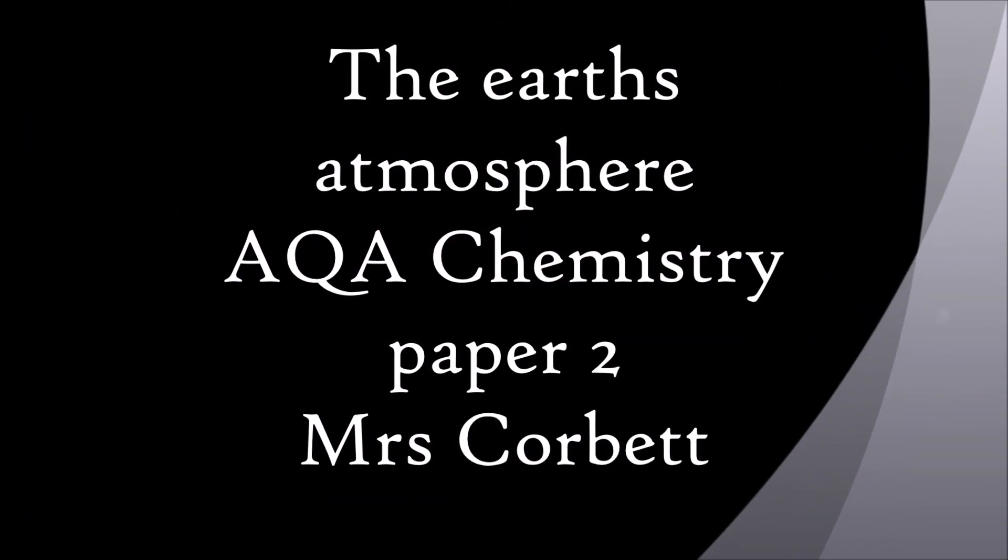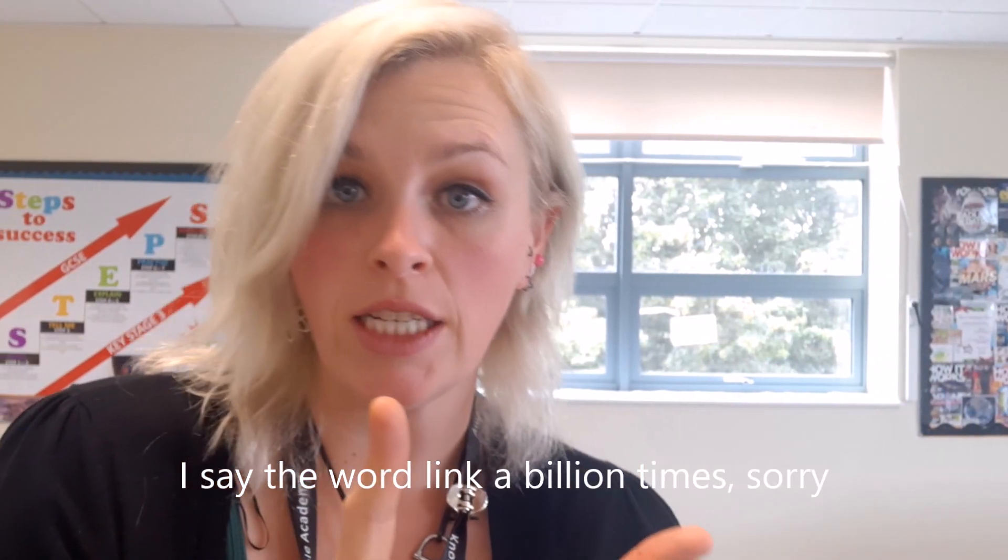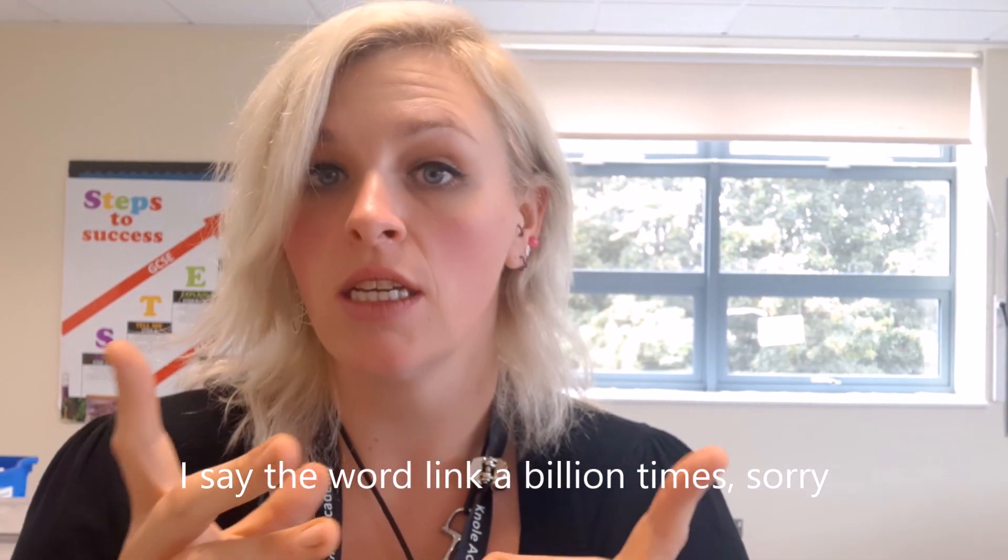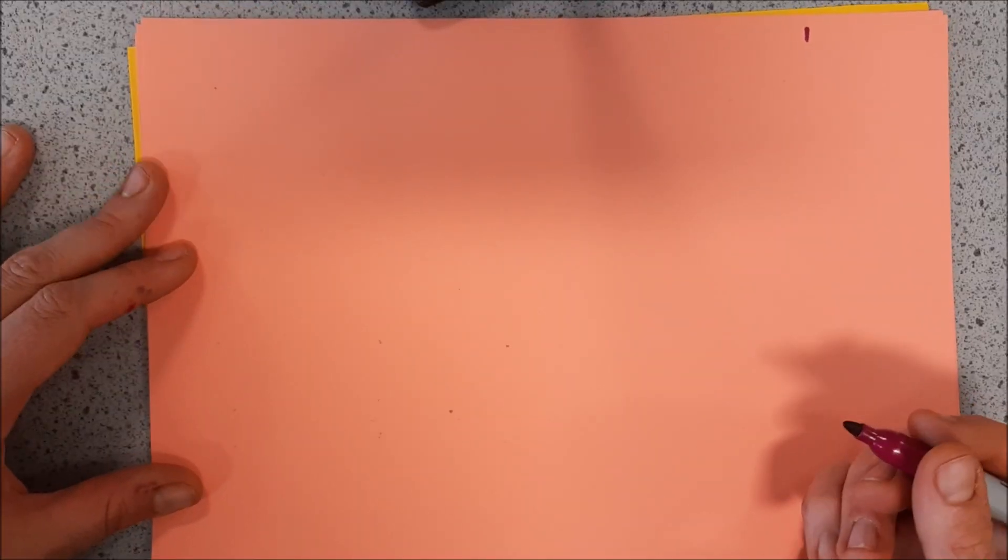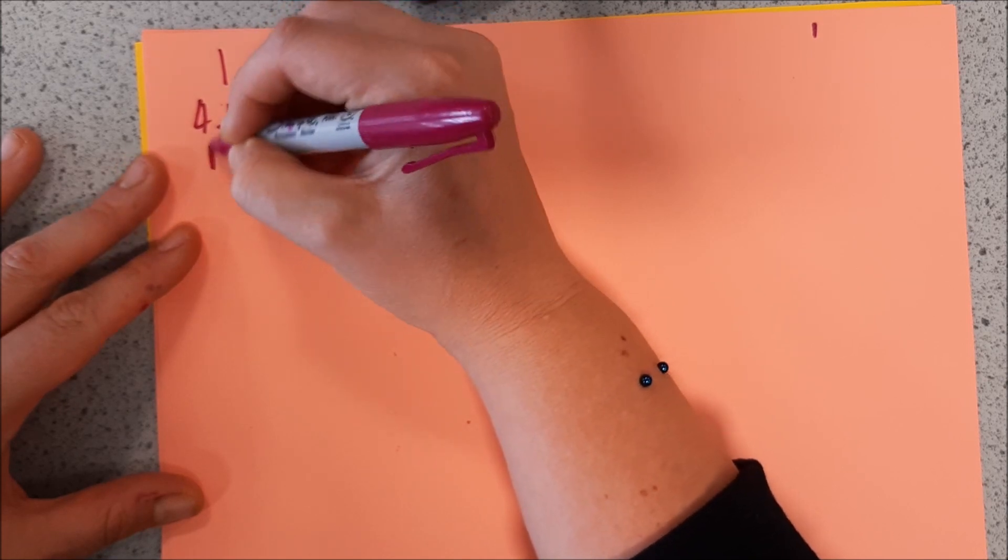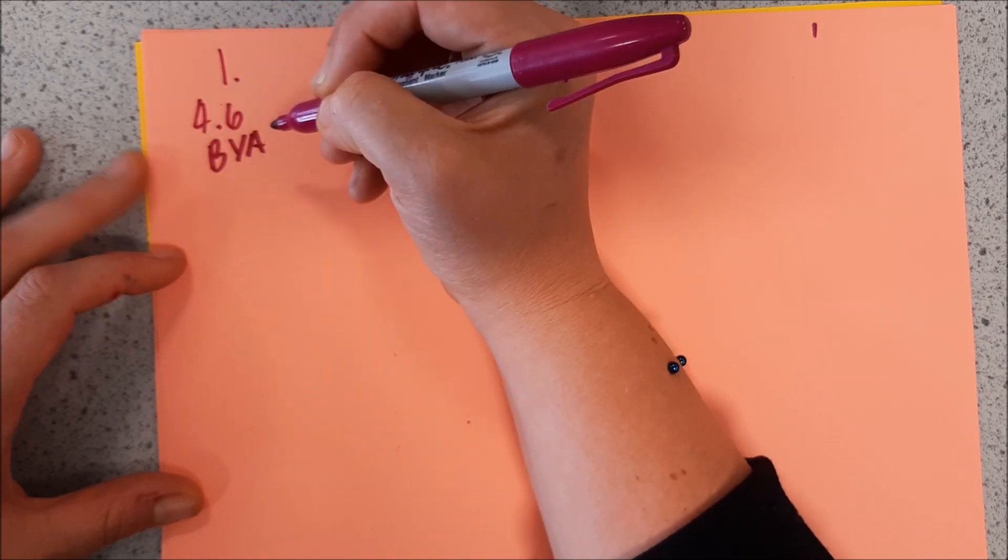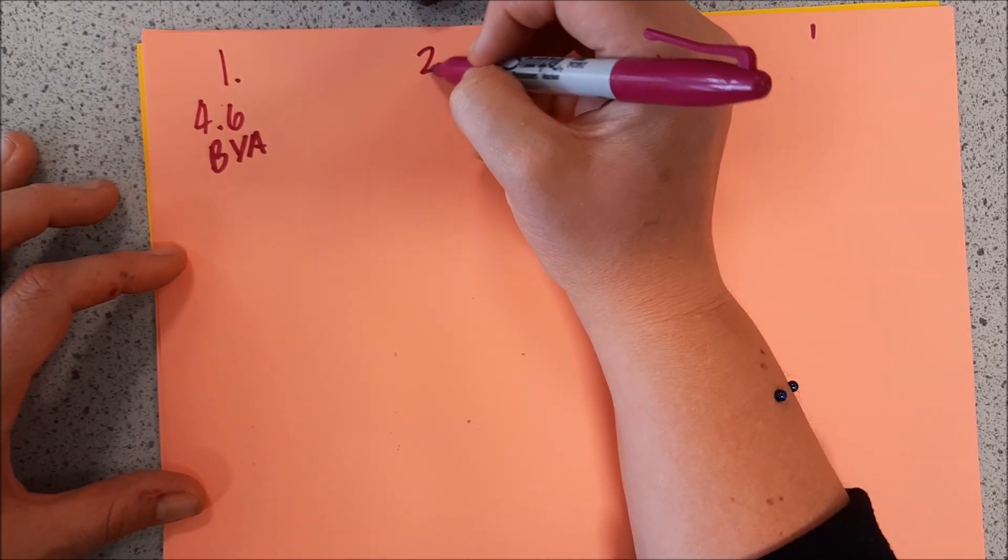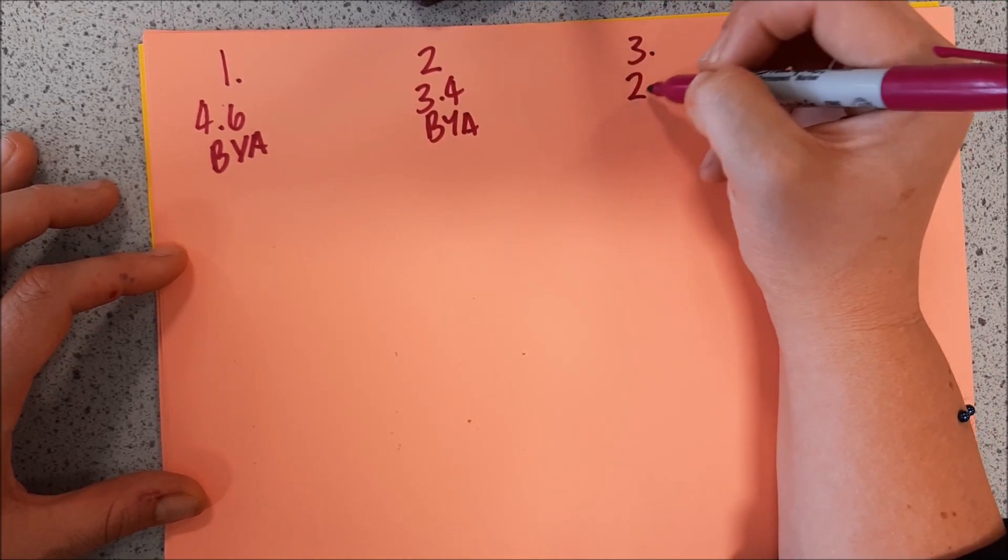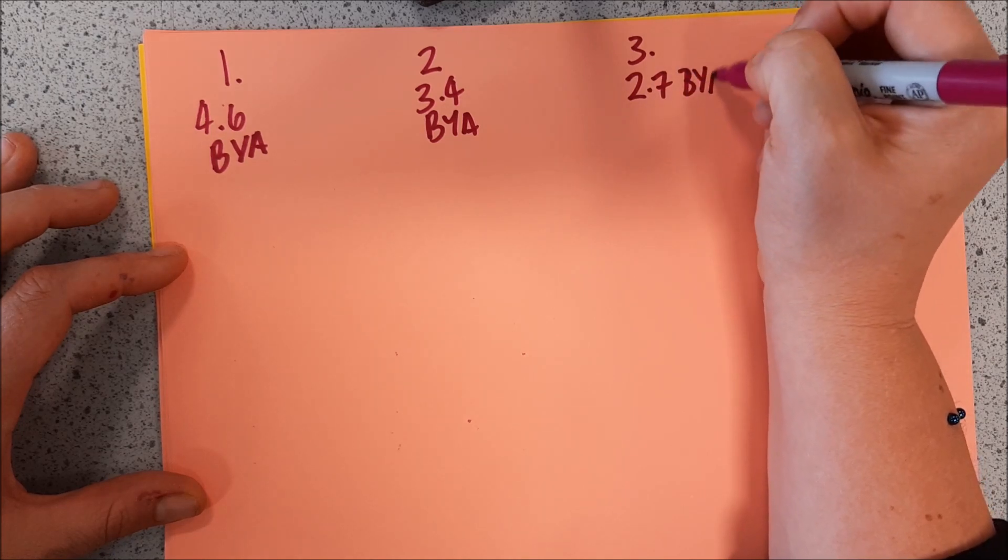Let's get going. Worth saying, pay attention to the amount of links that we have to biology and other parts of chemistry in this. That's important. Now let's go. Right, here's my revision page. I'm essentially going to split it into four times. So one is 4.6 billion years ago. Stage two is 3.4 billion years ago. Step three is 2.7 billion years ago.